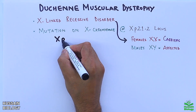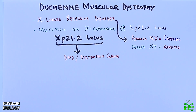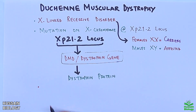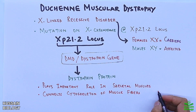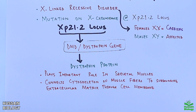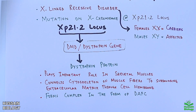At the Xp21.2 locus there is the DMD or dystrophin gene. This dystrophin gene produces the dystrophin protein, which plays an important role in skeletal muscles. It connects the cytoskeleton of the muscle fiber to the surrounding extracellular matrix through the cell membrane. This dystrophin protein forms a complex called the Dystrophin Associated Protein Complex (DAPC).